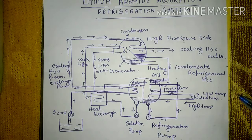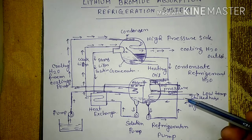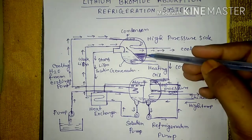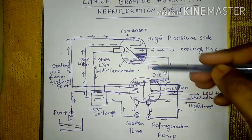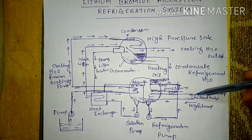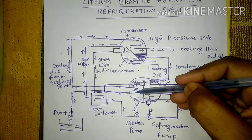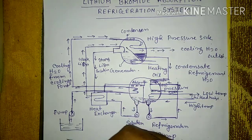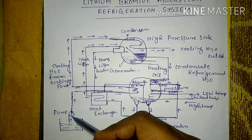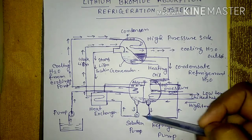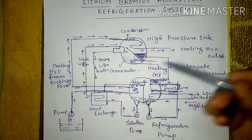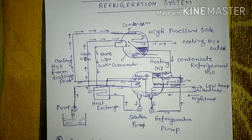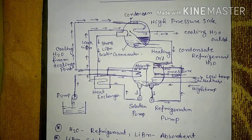So the components are: two cylindrical cells, a heating coil in the generator, a chilled water tube in the evaporator, cooling water tubes in the absorber and condenser, a cooling water pump, a solution pump, a refrigerant pump, and a heat exchanger.